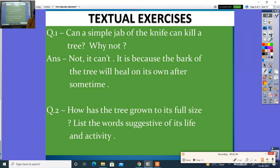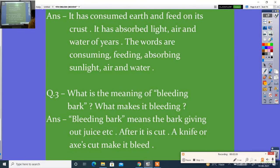Question number two: How has the tree grown to its full size? List the words suggestive of its life and activity. Braksh kis tarah se apne poore aakar mein badhta hai? Uski jeevan ki gatividiyo ke baare mein batayi. Answer: It has consumed earth and fed on its crust. It has absorbed light, air and water of years. The words are consuming, feeding, absorbing sunlight, air and water. Isne mitti ko sokha hai aur bahari parat se grahit kiya hai. Aur isne pani, prakash aur jo bhi hawa, yeh saari cheez ne vidyamaan kiya hai.